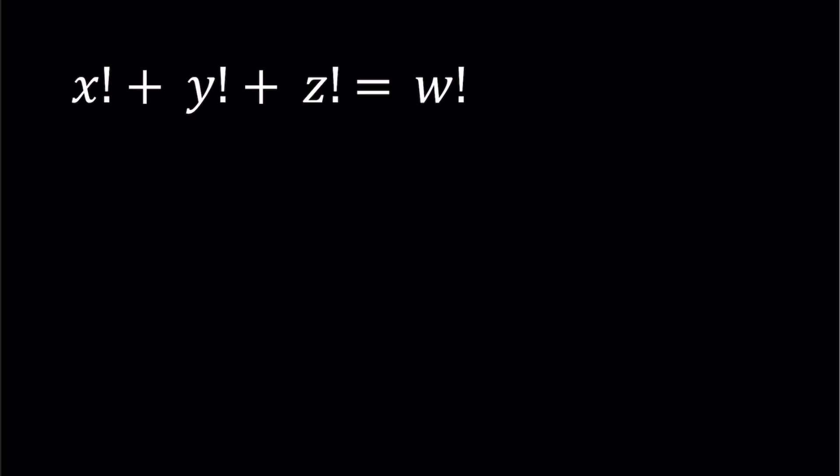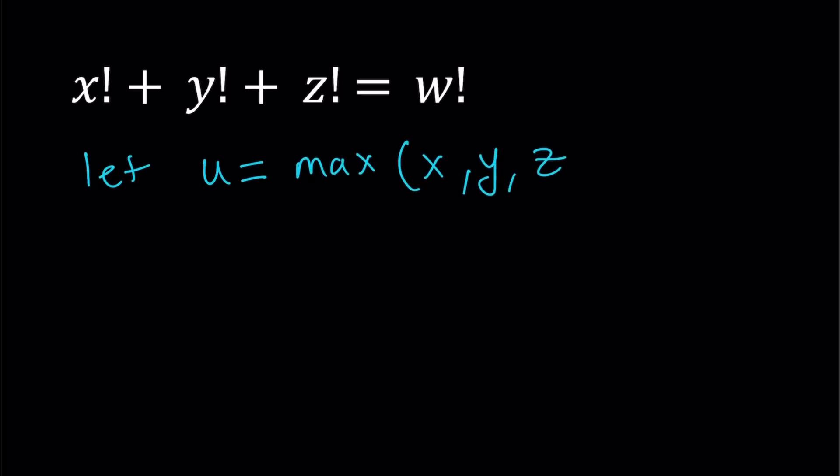I'm going to set a different variable here for the maximum of these values. Why is that important? Because if I can compare the maximum of a number to a bunch of numbers, then I can make some comparisons, because we don't know which one is greater. And if they're all equal, obviously the maximum is going to be equal to one of the numbers. So let u equal max of x, y, z — whatever the largest number is, I'm going to call that u.